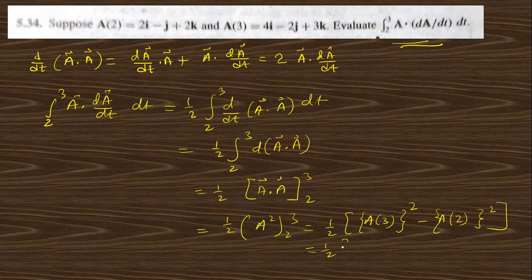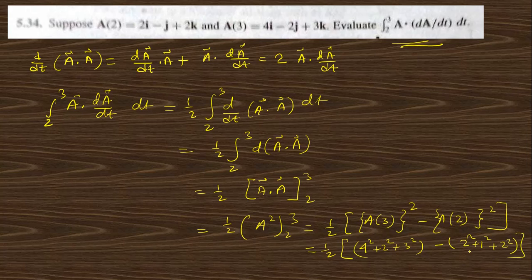So this is |a(3)|² − |a(2)|². Putting in a at t = 3: √(4² + 2² + 3²) gives 16 + 4 + 9. And for a at t = 2: 2² + 1² + 2² gives 4 + 1 + 4 = 9. So 29 − 9 = 20, divided by 2 gives 10. This is the answer to this question.